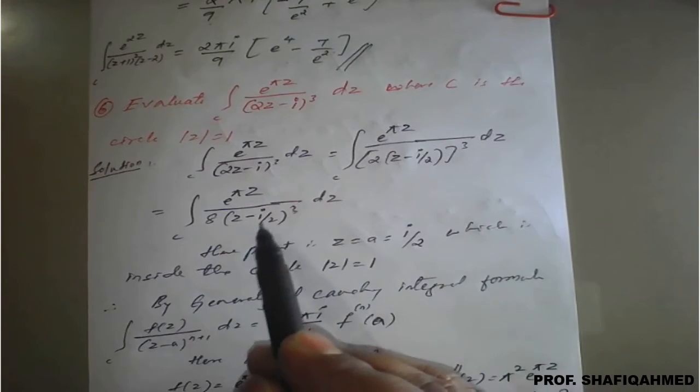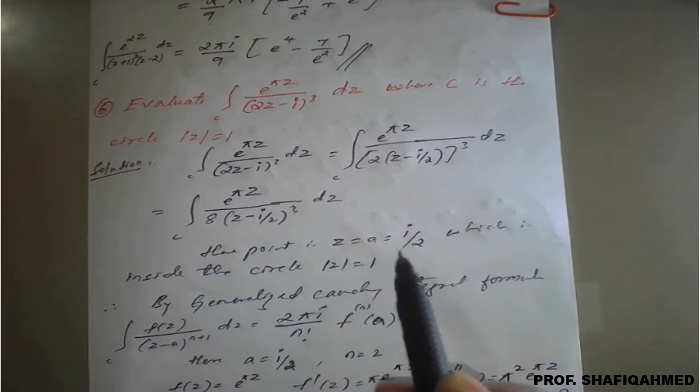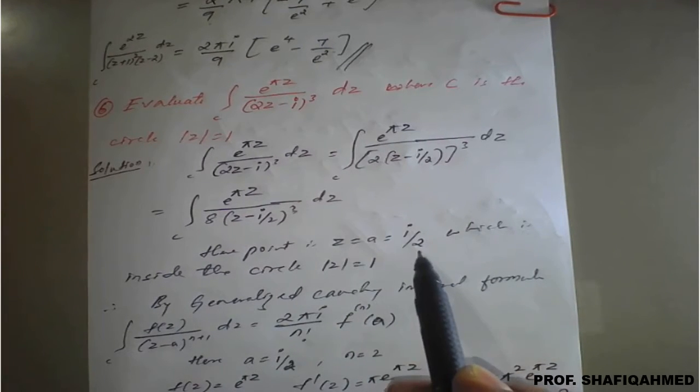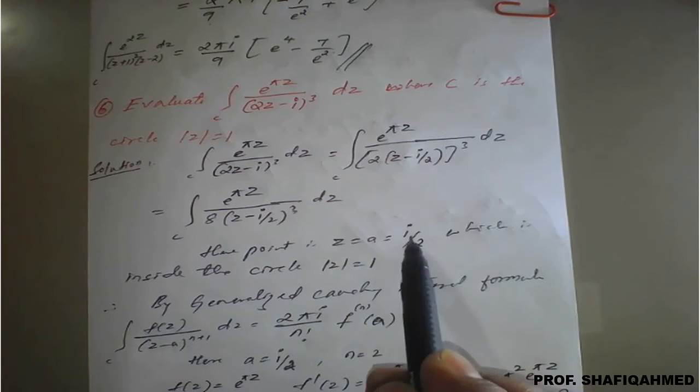Here you can find that the pole value, that is the a value, is i upon 2, which means you neglect i and consider as 1 upon 2.